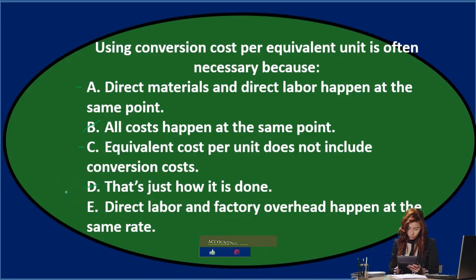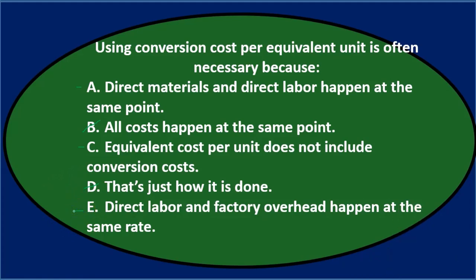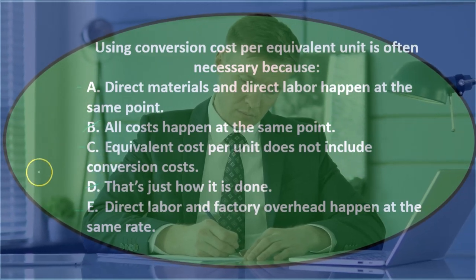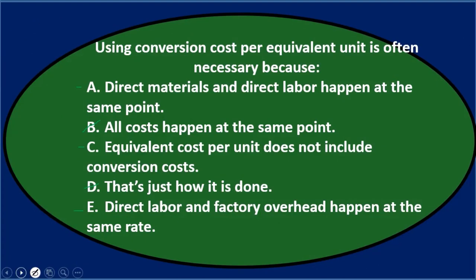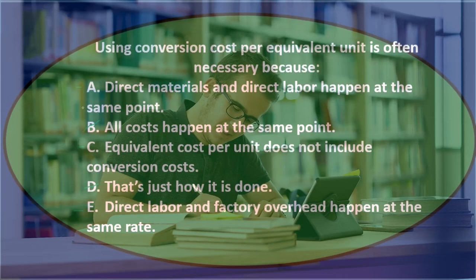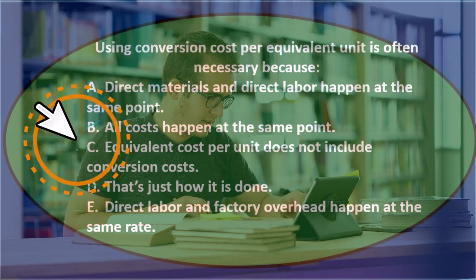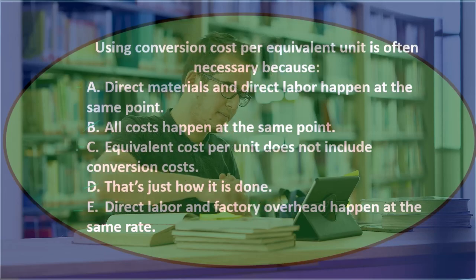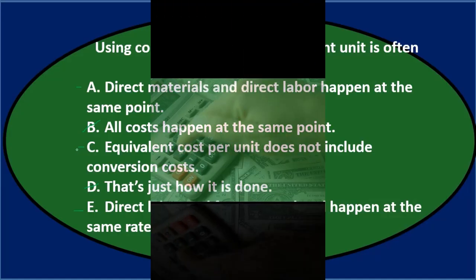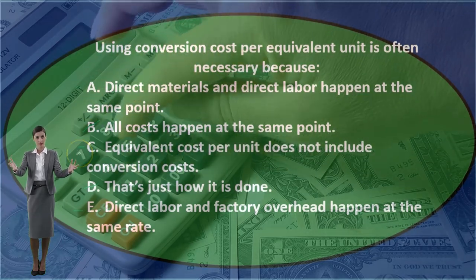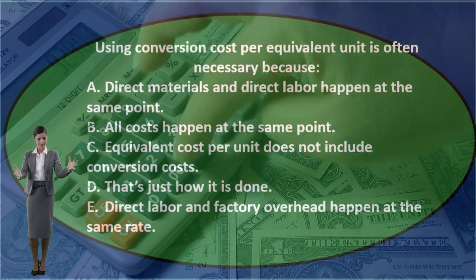Option C: equivalent cost per unit does not include conversion costs — that doesn't seem right because equivalent cost per unit is trying to estimate all costs incurred so far, which would include materials and whatever conversion has happened up to that point. Option D: that's just how it's done — probably not an appropriate answer; we'd like more detail than that.